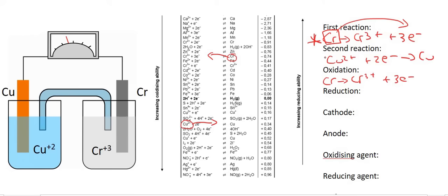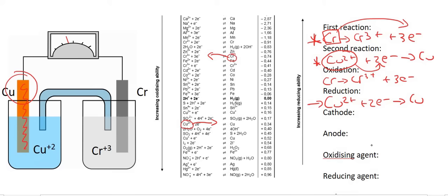The reduction reaction is going to be the second one, because Cu2+ is gaining electrons — and remember, reduction is gain of electrons. Your cathode is where reduction takes place, and that's where the copper is happening, so your cathode is going to be copper. Your anode is going to be chromium. Your oxidizing agent is the substance that is reduced, and so that will be Cu2+. The reducing agent is the substance that is oxidized, and so that will be Cr.